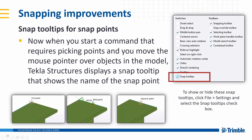As well as showing the triangle for mid point, the little marker for nearest, and the square for end point, it also gives you a tooltip that's activated in the options — click on the snap tool tooltips, and as you go along you can see exactly what you're snapping to without relying on the sort of images.